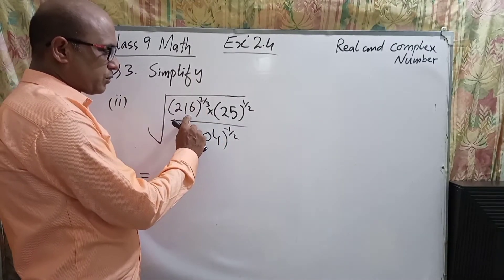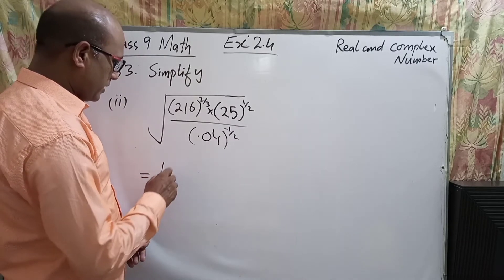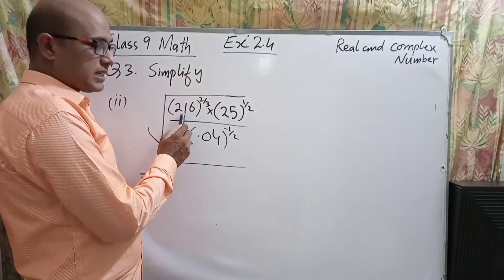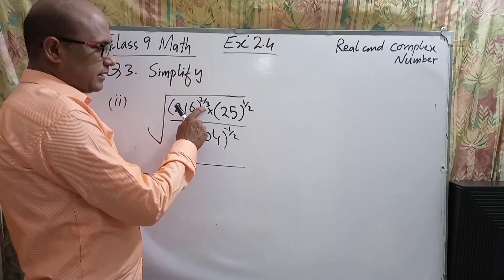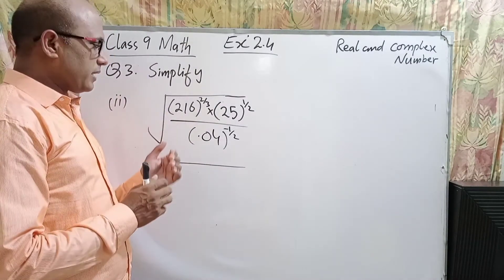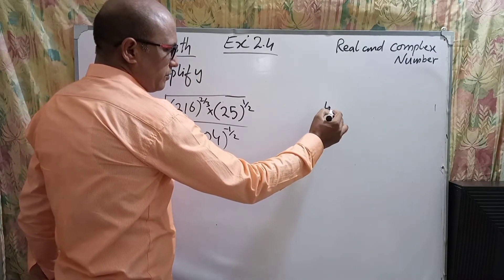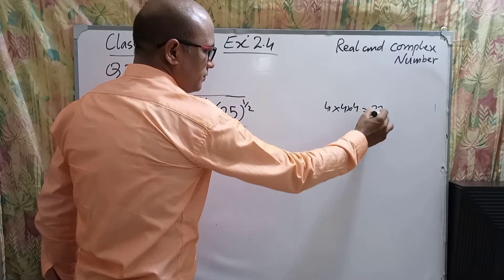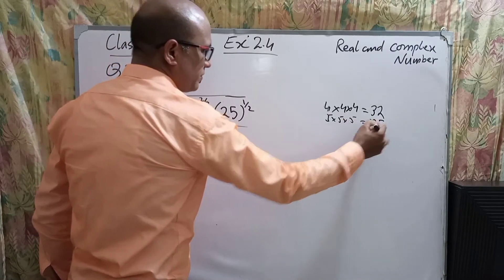According to the exponents, we have to write these numbers in factors. For 216, we check if we can factorize it into three equal parts, because the denominator of the exponent is 3, so we need a base raised to the power 3. Let's check: 4×4×4 = 64, that's not it; 5×5×5 = 125, that's not it; 6×6 = 36, and 36×6...